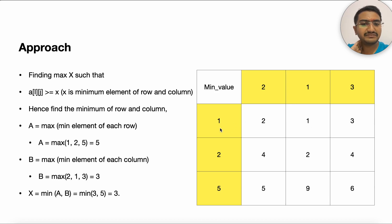So the first row is 2, 1, 3, the minimum element is 1. Similarly for second row the minimum element is 2. The third row the minimum element is 5.